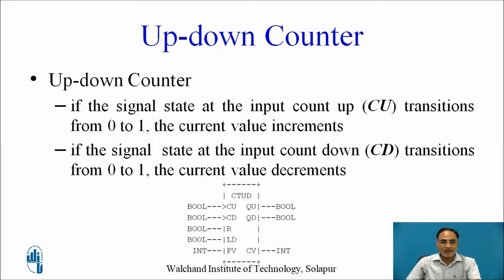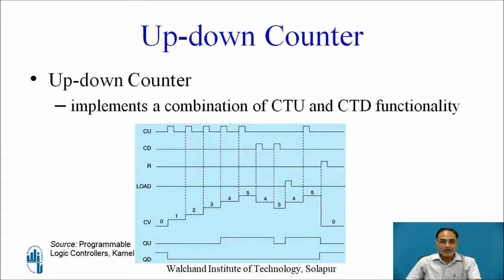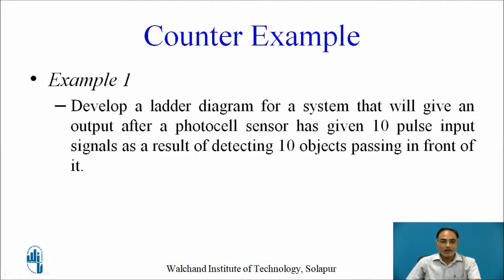The up-down counter allows both up and down counting. If the CU signal transitions from 0 to 1, the current value increments; if the CD signal transitions from 0 to 1, the current value decrements. The waveform shows that with pulses applied to CU the CV increments, and with two pulses applied to CD the counter value decrements by two.